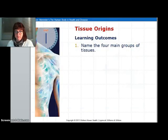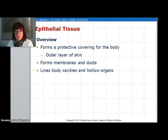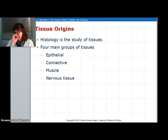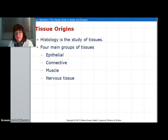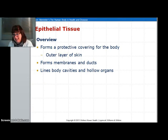To begin with, there are four types of tissues: epithelial, connective, muscle, and nervous. When you look at the tissue, first off, you have epithelial tissue. Epithelial tissue is for a protective outer covering — it's what forms membranes and ducts. It lines body cavities and hollow organs. It's very important.